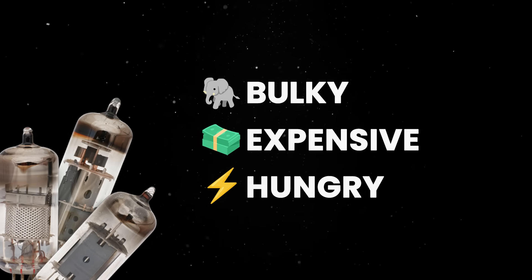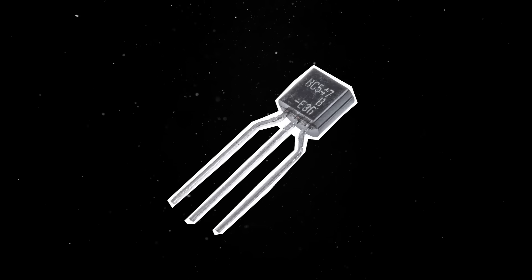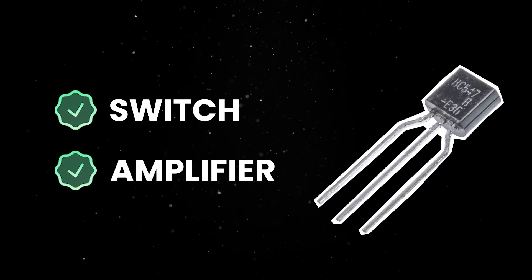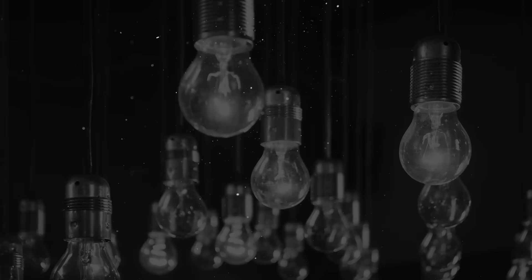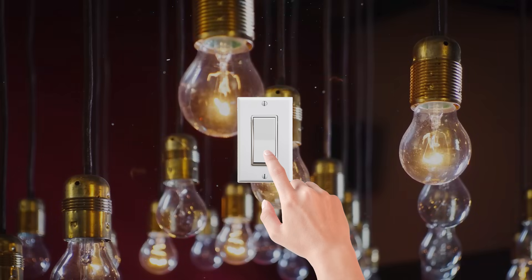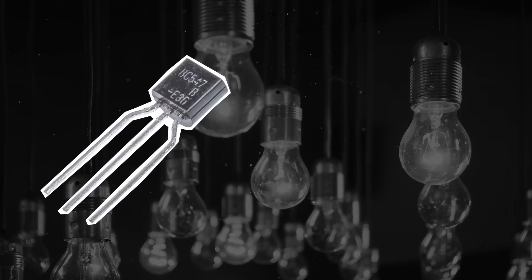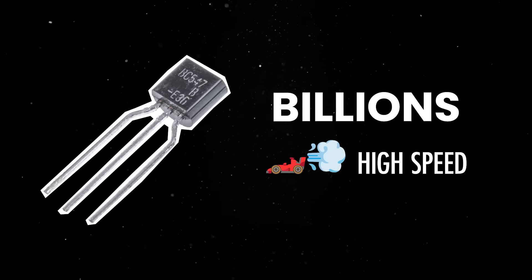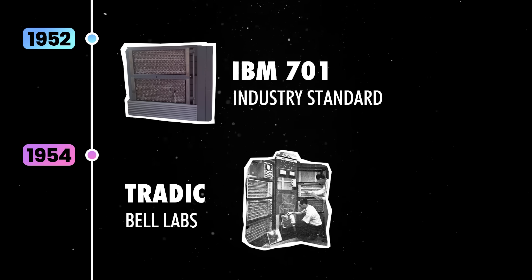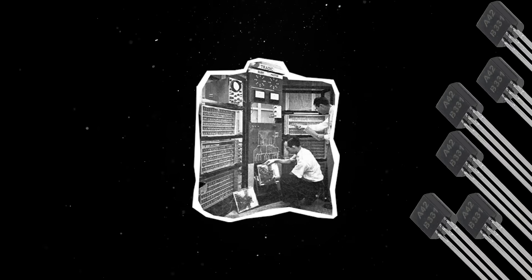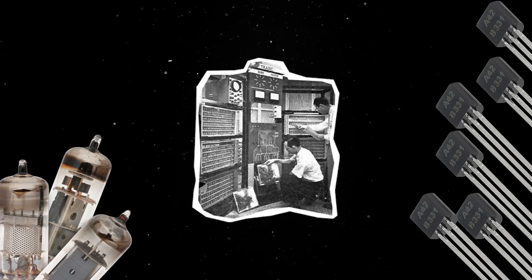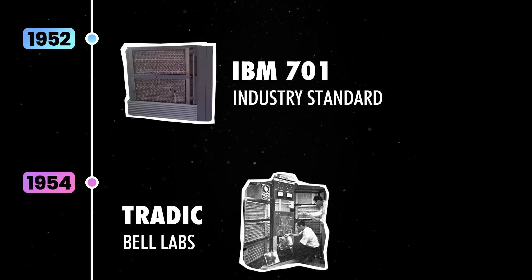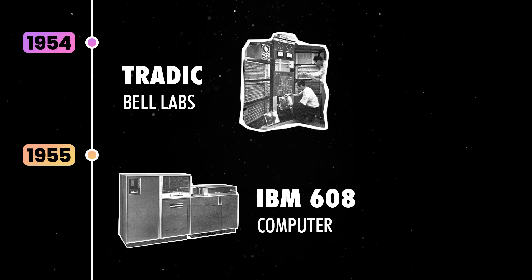A tiny invention from Bell Labs was about to change that. Transistors are tiny electronic components that act as both a switch and an amplifier for electrical signals. They control the flow of electricity in a circuit, similar to how a light switch turns electricity on and off. Unlike a traditional mechanical switch, a transistor can switch millions or even billions of times per second, making it essential for high-speed computing. The first fully transistorized computer was built by Bell Labs in 1954 — Tradic contained about 700 transistors, replacing bulky vacuum tubes and showing that computers could be built on a much smaller scale. Just a year later, IBM introduced the IBM 608, the first commercial computer to completely replace vacuum tubes with transistors.